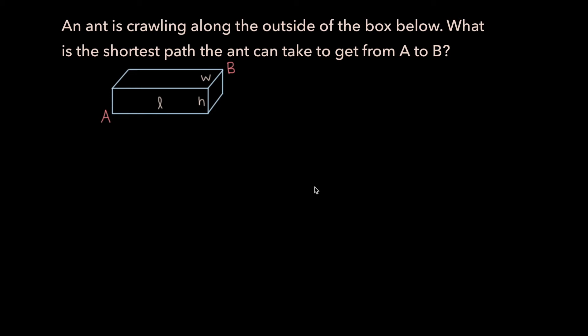In this video we will consider the following problem: an ant is crawling along the outside of a box. What is the shortest path the ant can take to get from point A to point B?